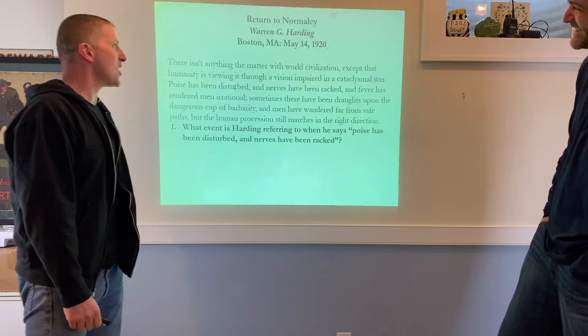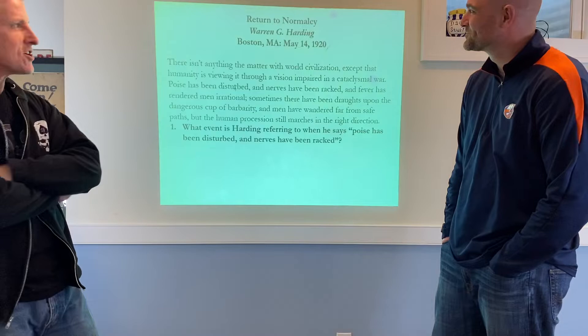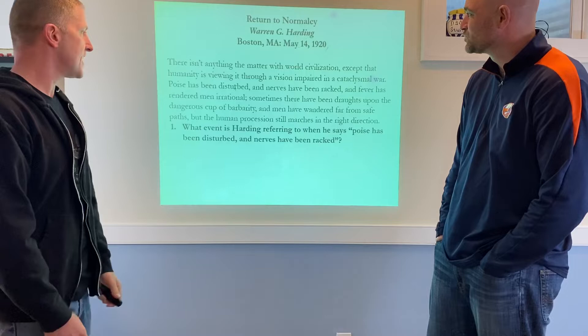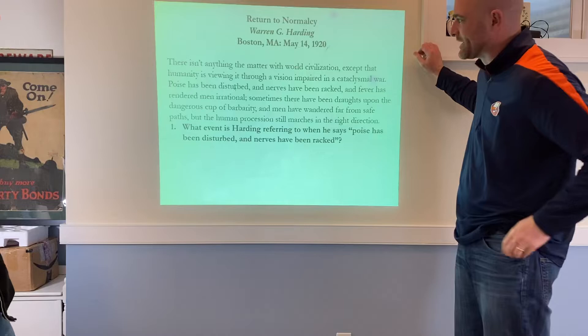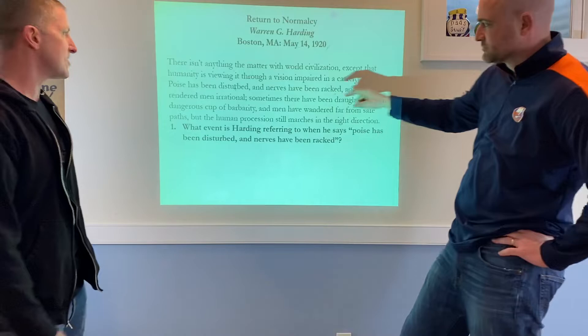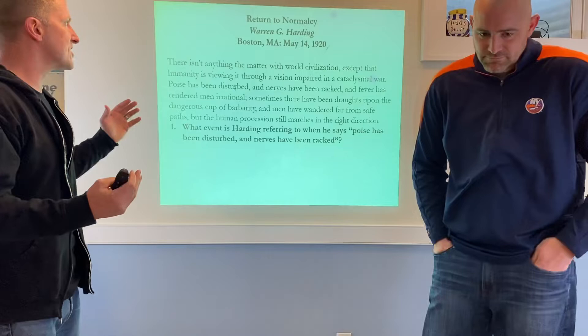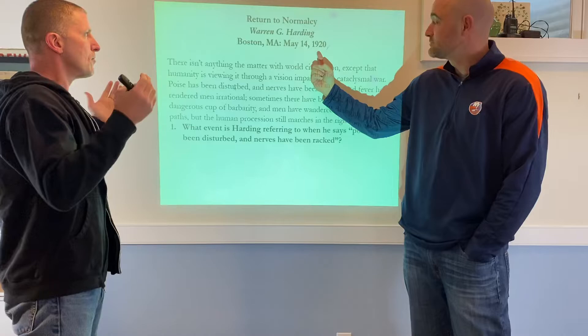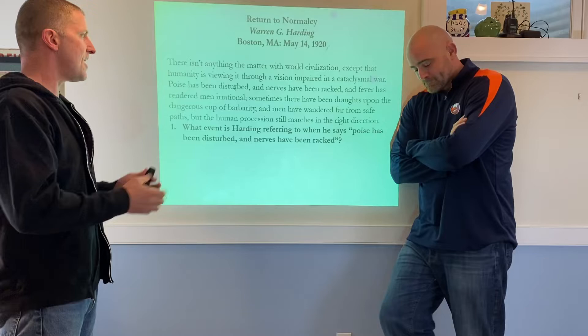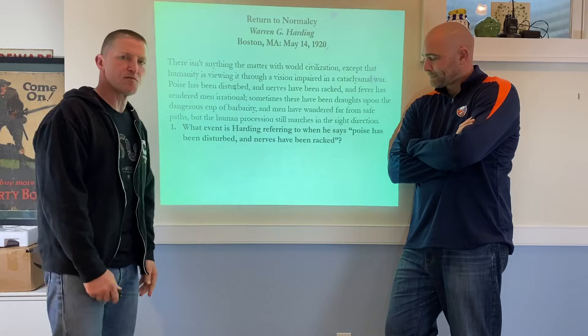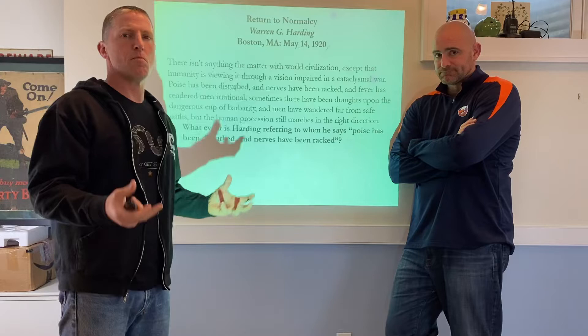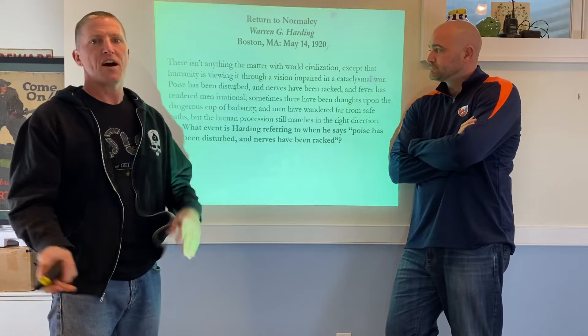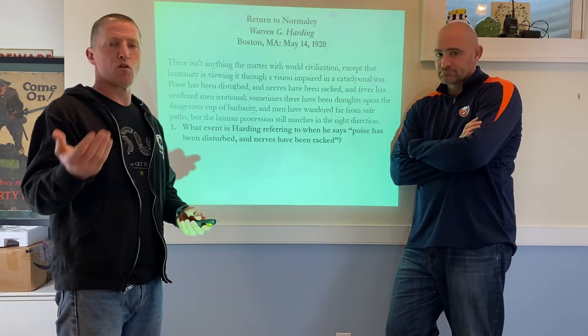And we're back. When we get to Warren G. Harding's inaugural speech — this was an assignment posted on Google Classroom — it's now May 14th, 1920, so we'll just go over the questions. When we're talking about what event Harding is referring to when he says 'poise has been disturbed, nerves have been racked' — consider the date. We're just getting out of World War One, after the 1919 Treaty of Versailles. So what nerves have been racked? This refers to sending U.S. sons, fathers, and brothers over into war.